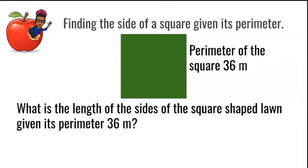What is the length of the sides of the square-shaped lawn, given its perimeter of 36 meters? This question tells us that the perimeter, or the distance around the square, is 36 meters. We need to find the length of each side. We know that in a square, all sides are of the same length.